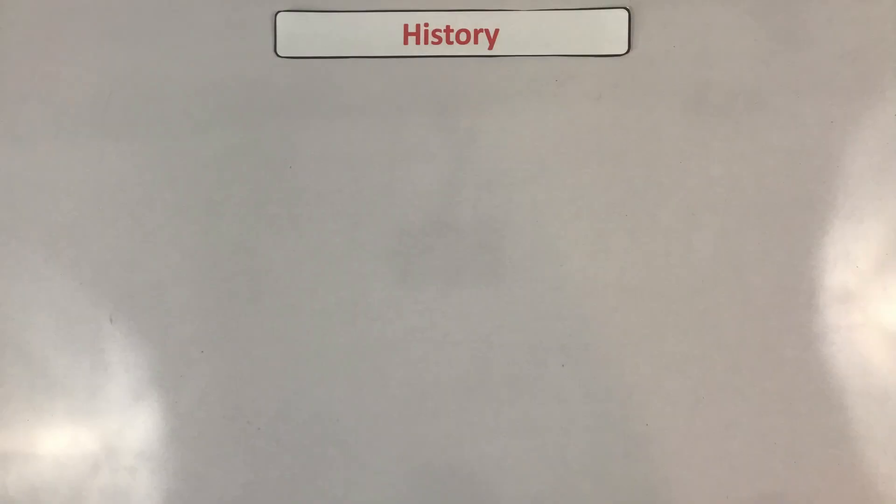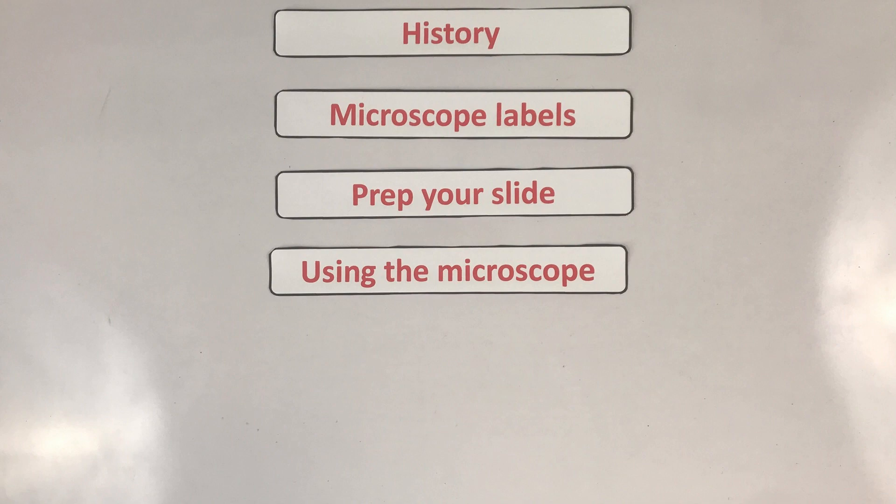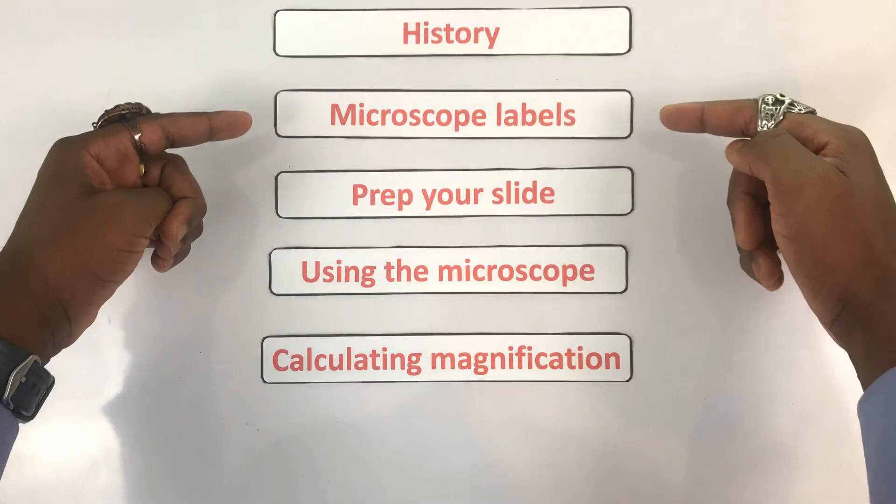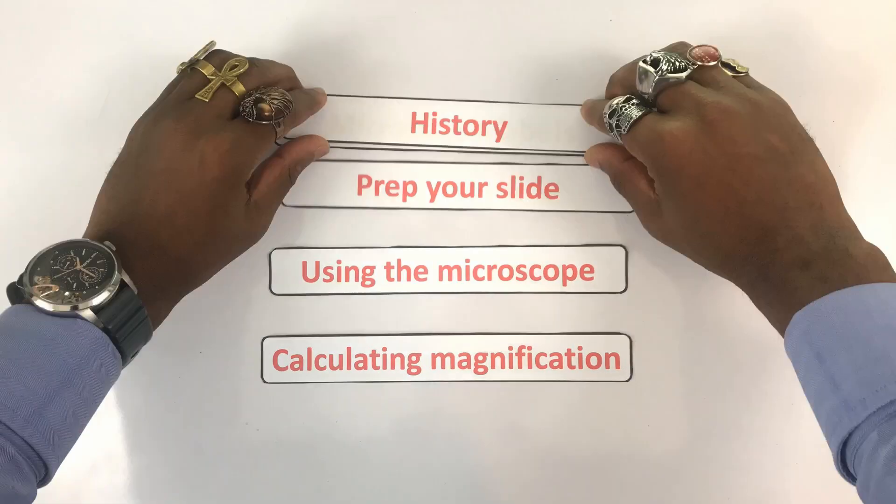We'll be covering the history of the microscope, how to label your microscope, how to prepare a slide, how to use your light microscope and finally how to calculate magnification. If you're doing some last minute revision check the timestamps below and while you're down there make sure you download the worksheet for today and the answers from last week's video. Alright let's get started.